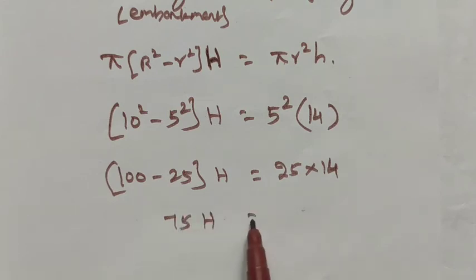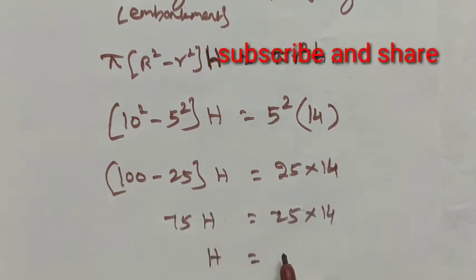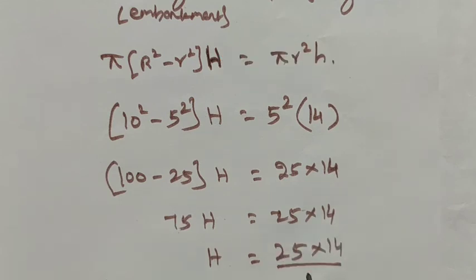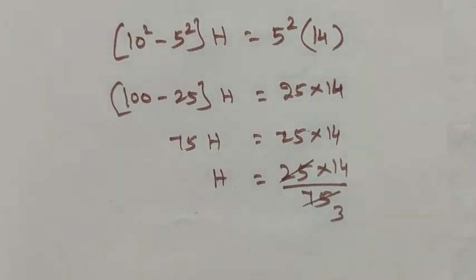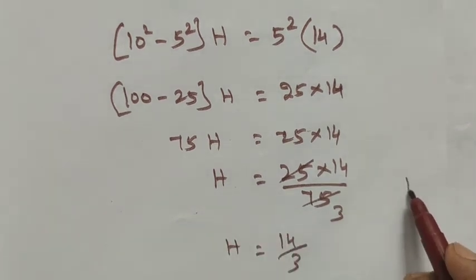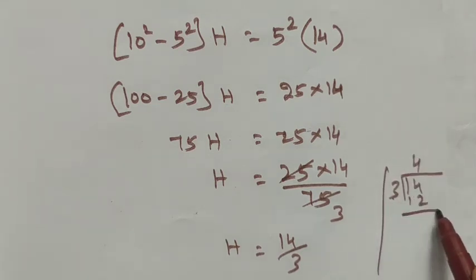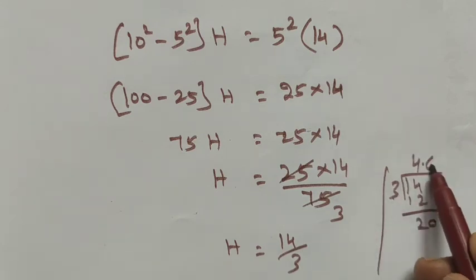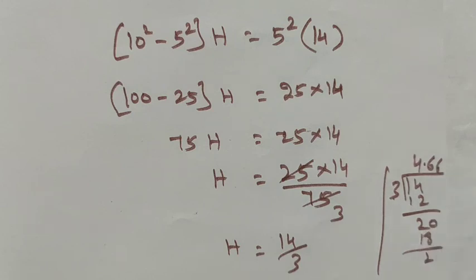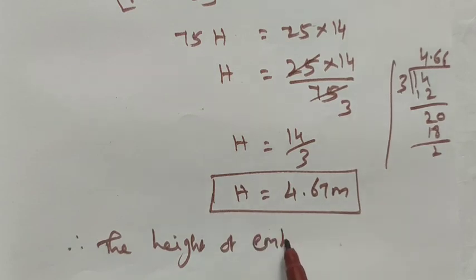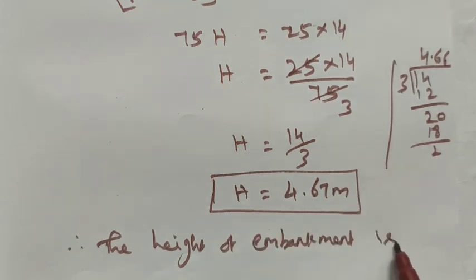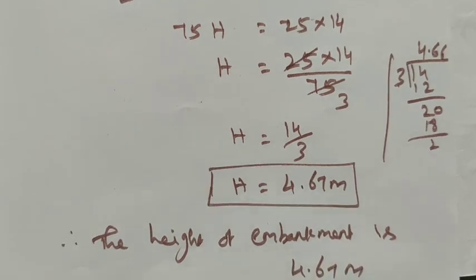We get 75H = 25 × 14, so H = (25 × 14) / 75 = 14/3. Dividing: 14 ÷ 3 = 4.6666..., which gives approximately 4.67 meters. Therefore, the height of the embankment is 4.67 meters.